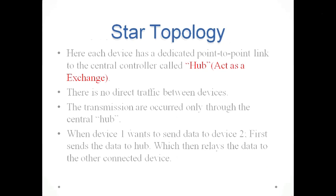The next one is star topology. Each device has a dedicated point-to-point link to the central controller called a hub, which acts as an exchange. There is no direct traffic between devices; transmissions are routed only through the central hub. When device one wants to send data to device two, it first sends the data to the hub, which then relays the data to the other connected device.